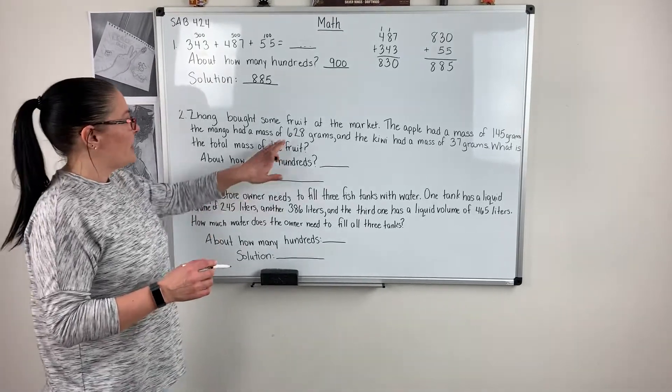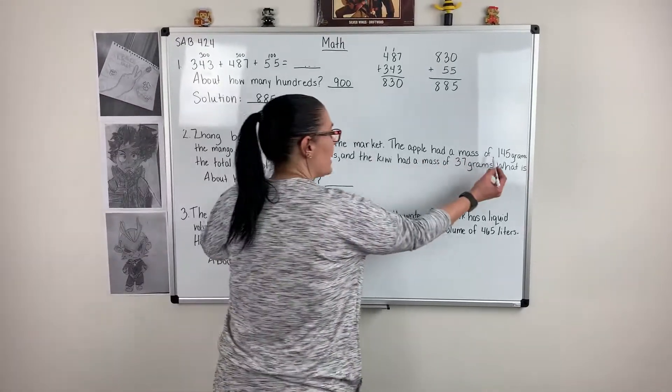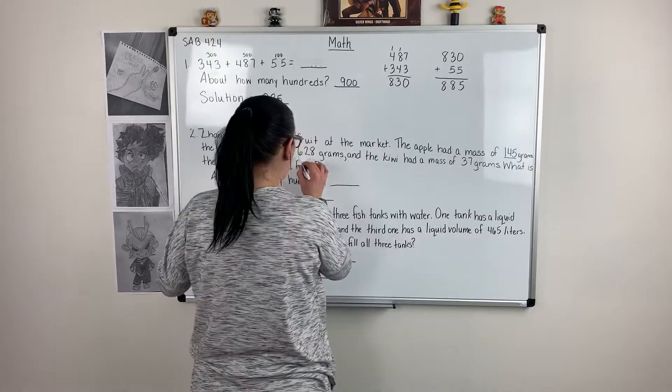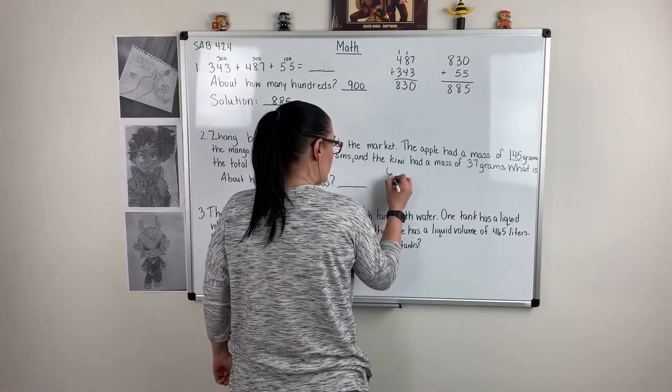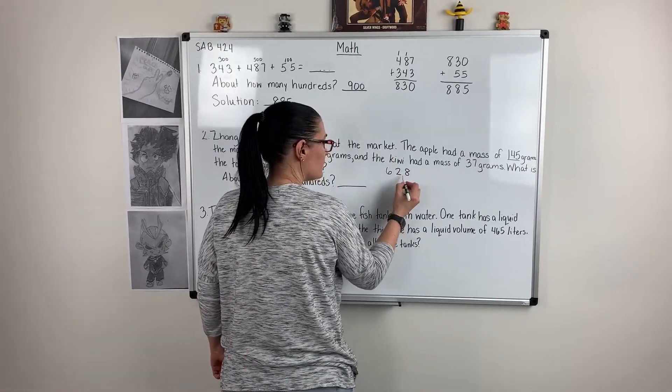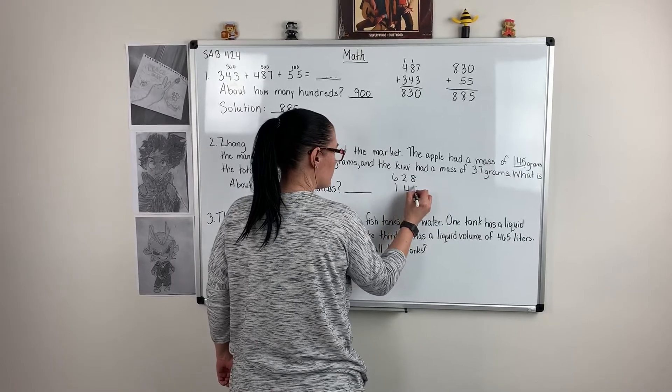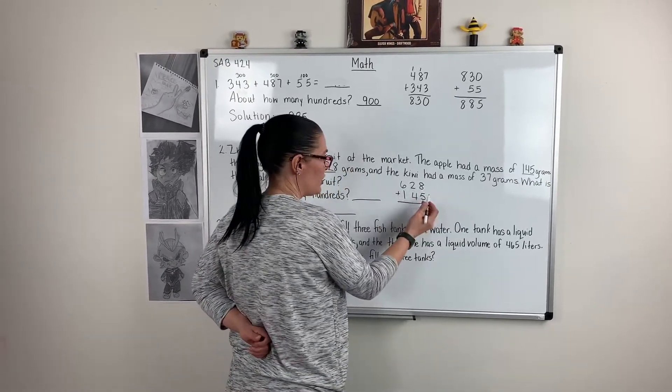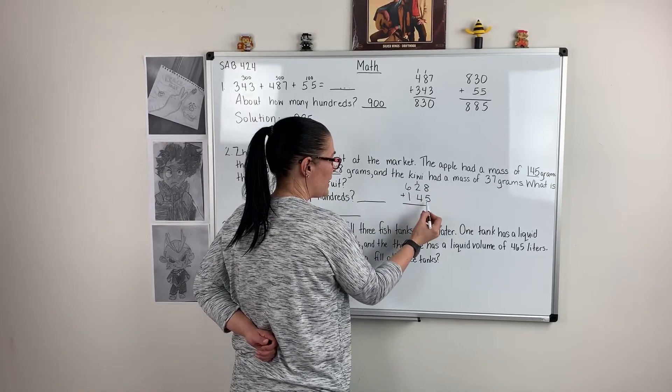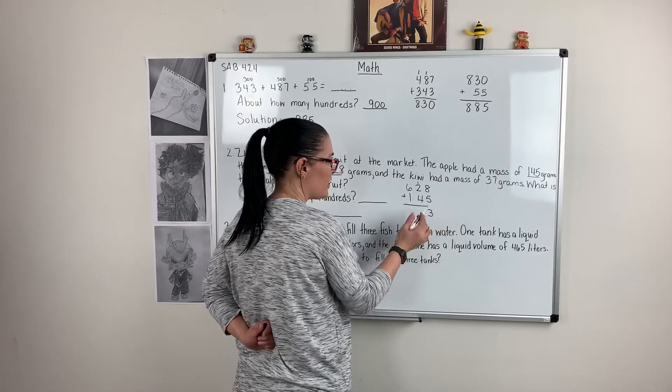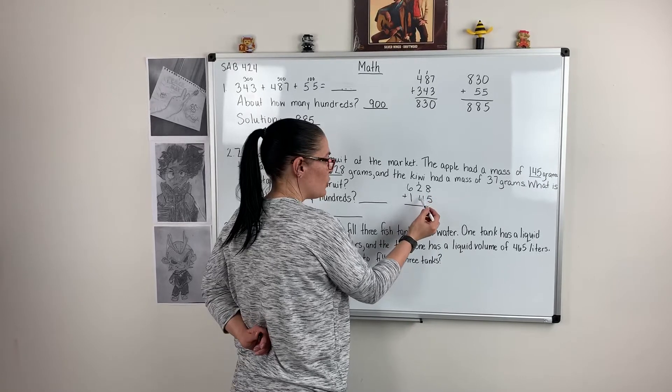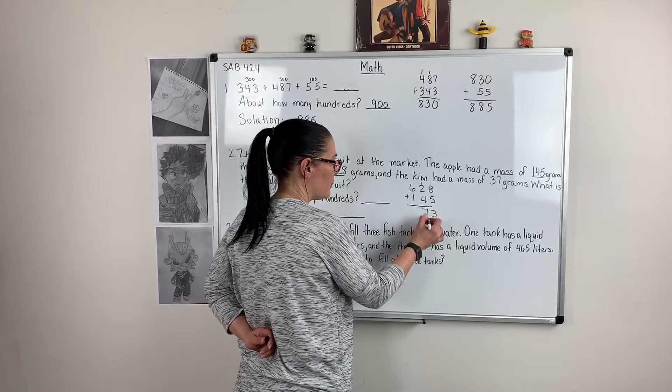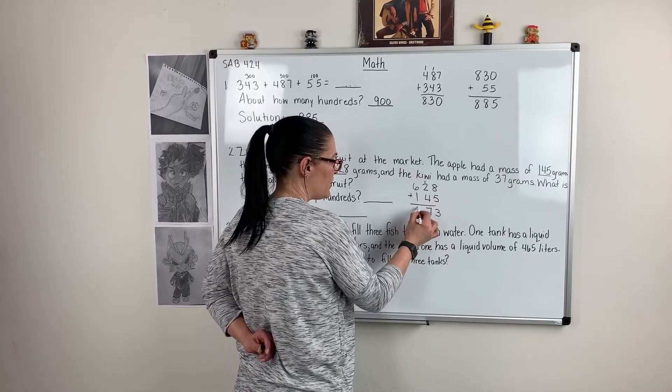I'm going to start with my two biggest, which is 628 and 145. 8 plus 5 is 13. I need to put my 10 in my tens place, my 3 ones that are left over. 1 plus 2 plus 4 is 7. 6 plus 1 is 7.